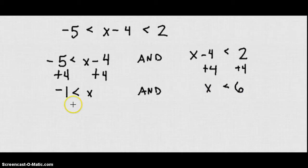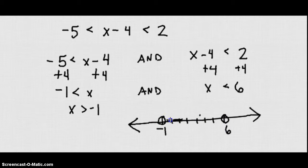So we are basically saying x is greater than negative 1 but x is less than 6. So on a number line it would look like negative 1 here and 0, 1, 2, 3, 4, 5, 6 here. X is less than 6 but greater than negative 1. So we will shade in between.